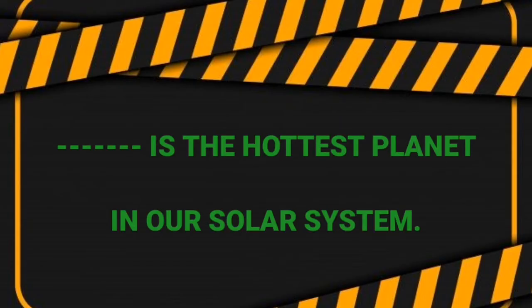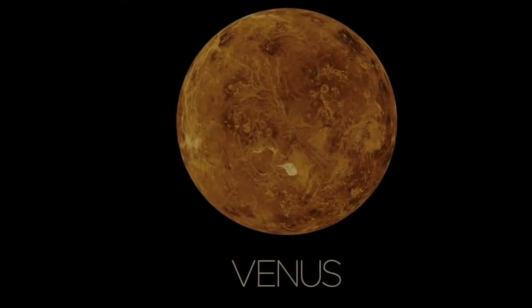Next question. Dash is the hottest planet in our solar system. Eetavum chooedaria planet ethan. Answer: Venus.